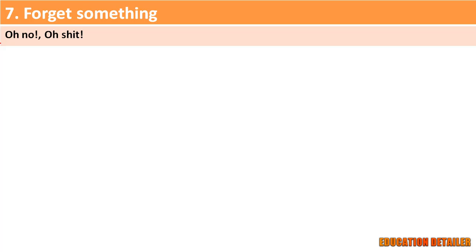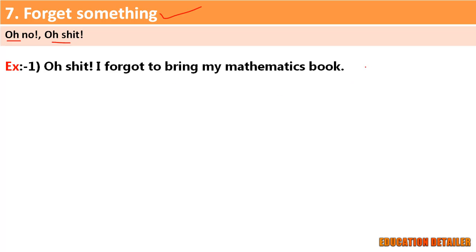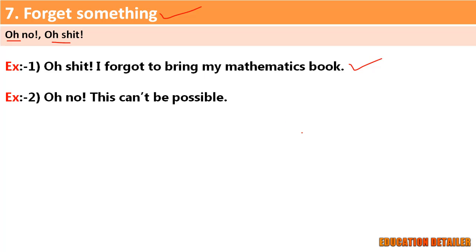Seventh, when we forget something, we use interjection words like oh no, oh shoot, etc. For example: 'Oh shoot, I forgot to bring my mathematics book!' and 'Oh no, this can't be possible!'